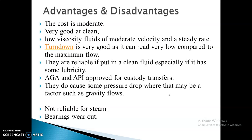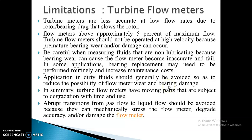Regarding advantages and disadvantages: the cost is moderate, and the turbine flow meter performs very well in clean environments with low viscosity fluid at moderate velocity. Turndown is also very good. It is reliable when used with clean fluid, but not reliable for steam, and there is bearing wear as a disadvantage. As a limitation, it is less accurate for flow rates due to rotor and bearing drag that slows the rotor. It should only be used above five percent of maximum flow, and high velocity can damage the blades.